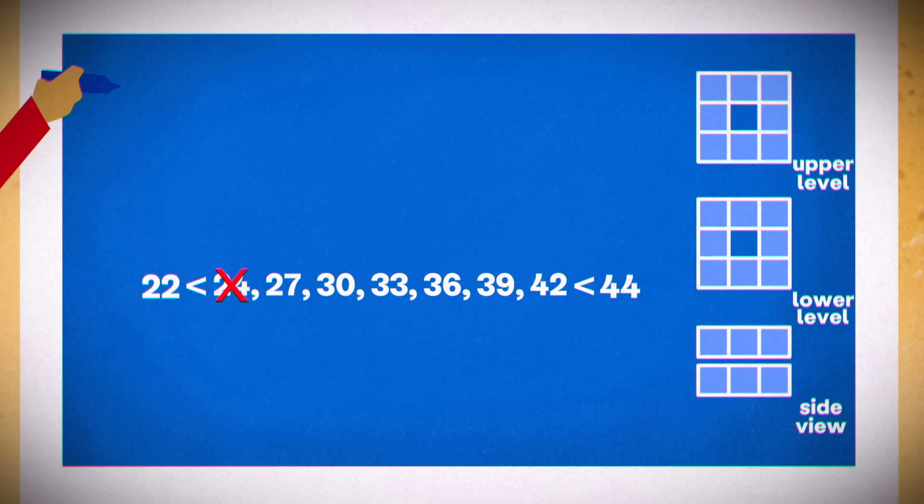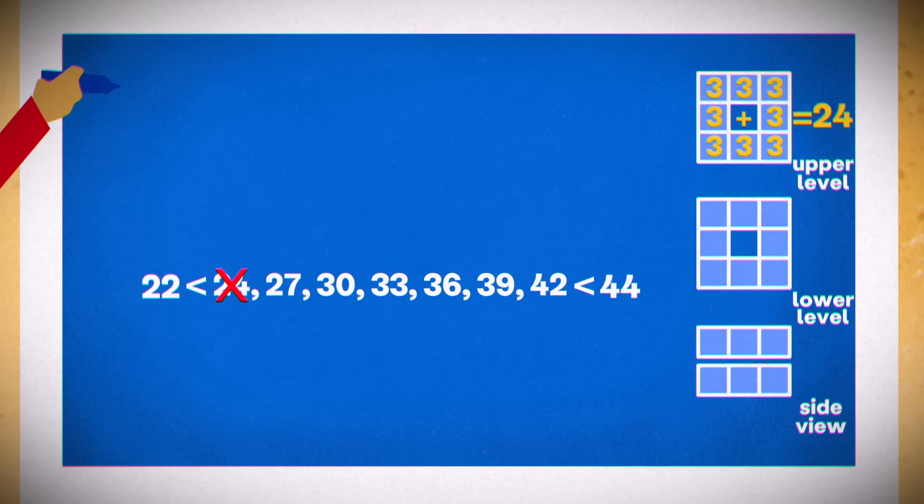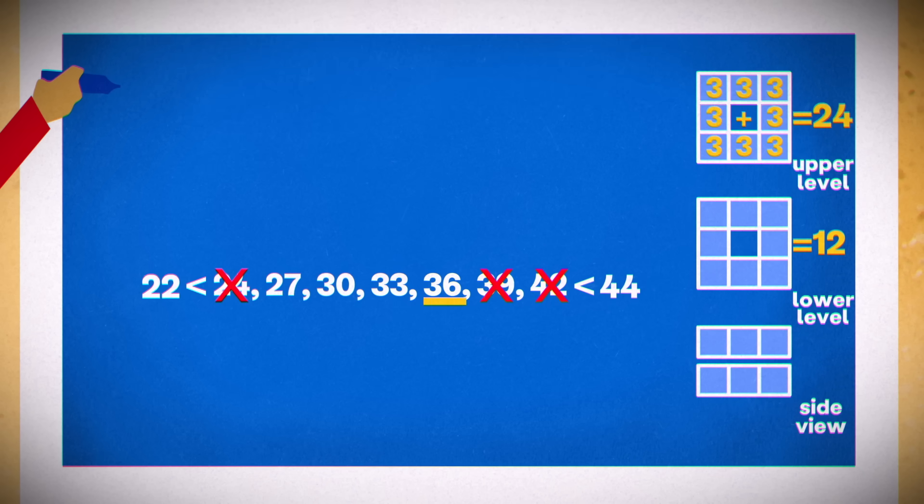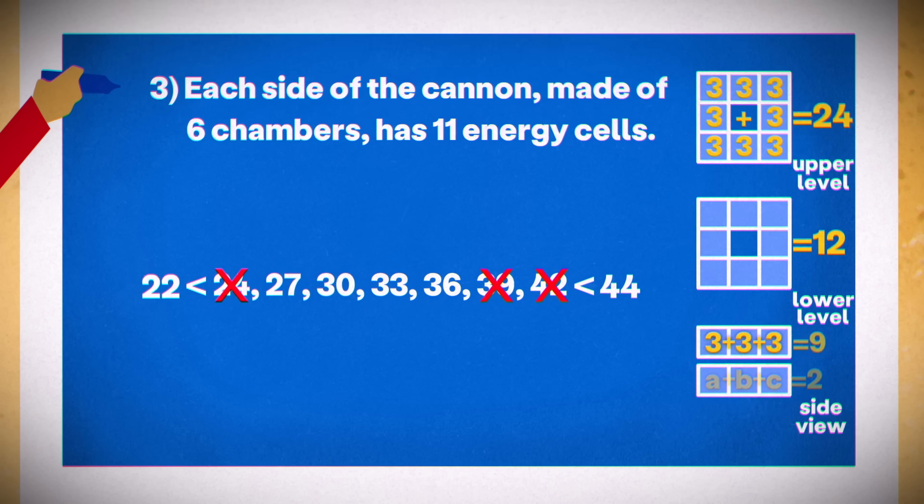Let's look at the other extreme. The upper level can have at most three times eight, or 24 cells, which would give a total of 36. That eliminates 39 and 42. With 36, if we had three cells in each chamber, each side of the upper level would already have nine of its 11 cells, meaning we'd have to leave empty chambers on the lower level. So 36 is also out.